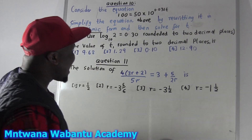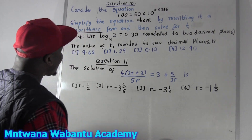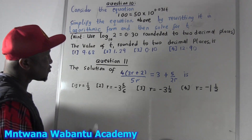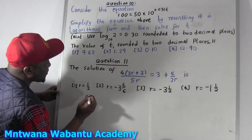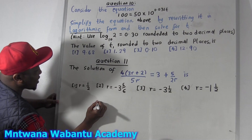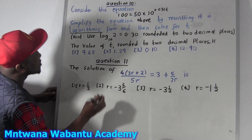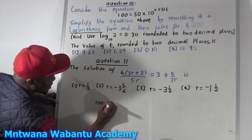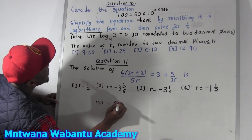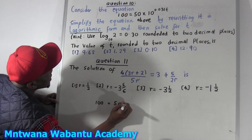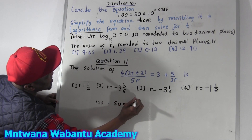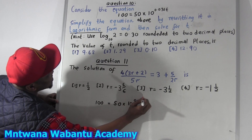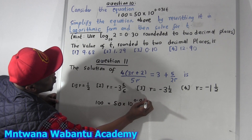So let's get started. Now we know what we're going to do. They say we have to rewrite it. Okay, let's rewrite. So we have 100 equal to 50 times 10 to the power 0.031T.